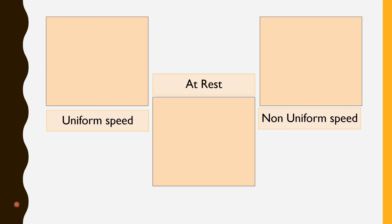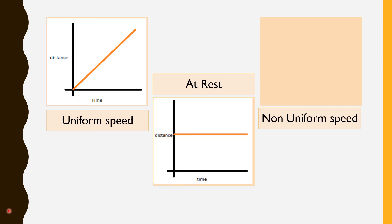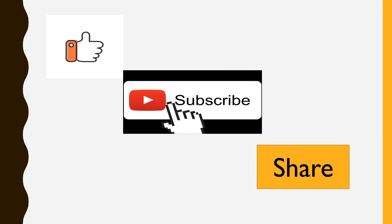In summary: for uniform motion, the graph will be a straight slanting line. If the vehicle is at rest, it will be a horizontal straight line. For non-uniform motion, where speed keeps on changing, the line will be a curved line. I hope you learned a lot in this chapter. If you have any doubt, you can comment below and ask me — I will rectify all your doubts. Thank you for your patience and listening. Don't forget to like, subscribe, and share. Thank you so much.